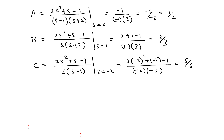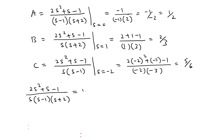So the final result is: (2s² + s - 1) over s(s - 1)(s + 2) equals (1/2)(1/s) + (2/3)(1/(s - 1)) + (5/6)(1/(s + 2)).